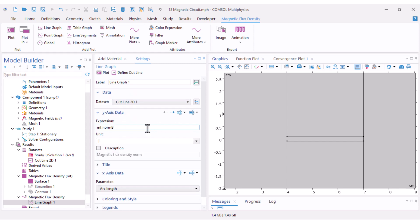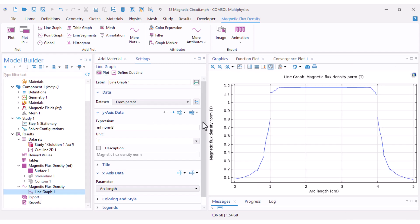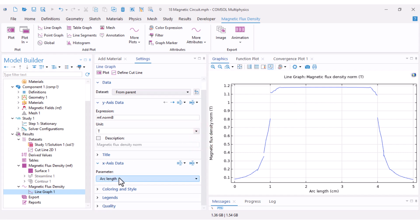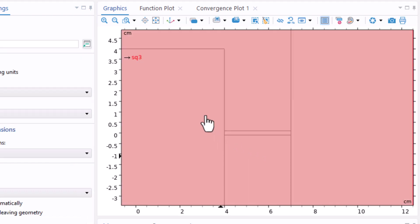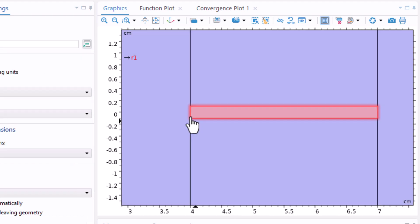Under dataset select your cut line. Notice that by default COMSOL plots mf.normB which is exactly what we want: the magnitude of the magnetic flux density. I click plot and you can see the magnetic flux density distribution across the air gap. To make it easier to interpret I change the parameter to expression and set my expression to x.